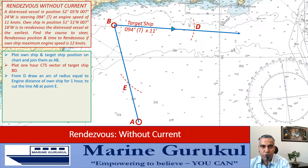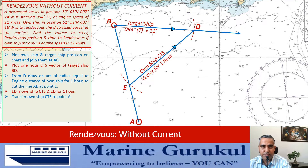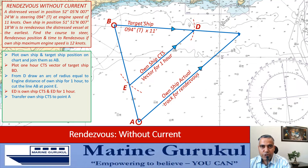Point E (Echo) is now visible on the screen. We will now join E (Echo) and D (Delta). The line Echo-Delta represents own ship's course to steer for rendezvous. We can now align our parallel ruler with the Echo-Delta line and transfer the CTS obtained to own ship position A. We have the own ship track in our plot. Let's mark it off with a single arrow — CTS is represented by a single arrow in chart work. The position where it meets the track of the target ship is point C (Charlie), which is the rendezvous position.